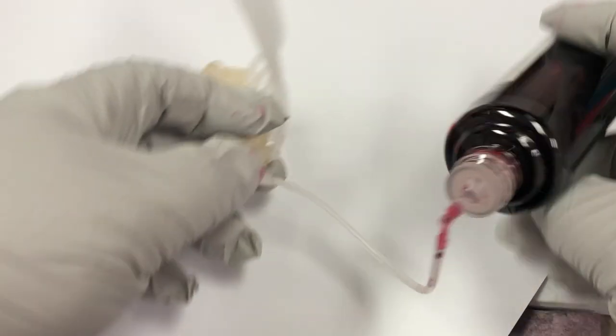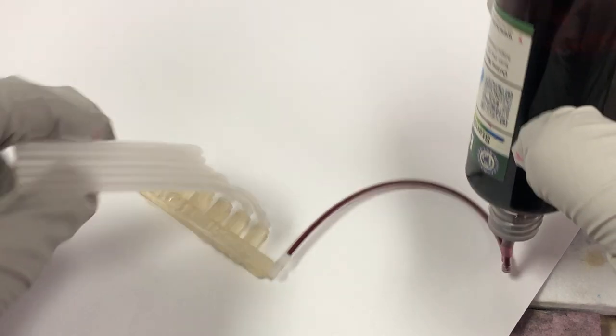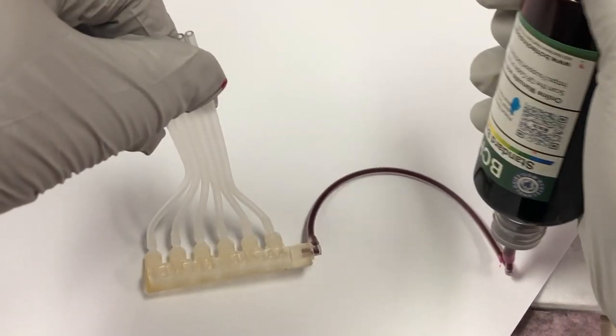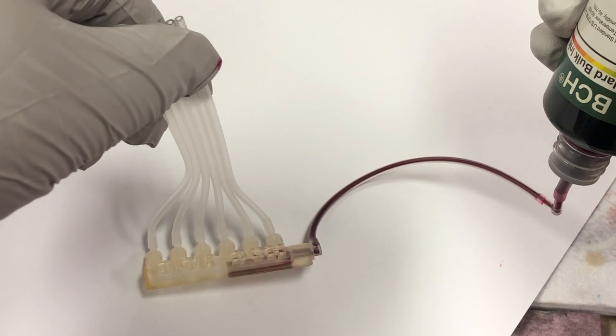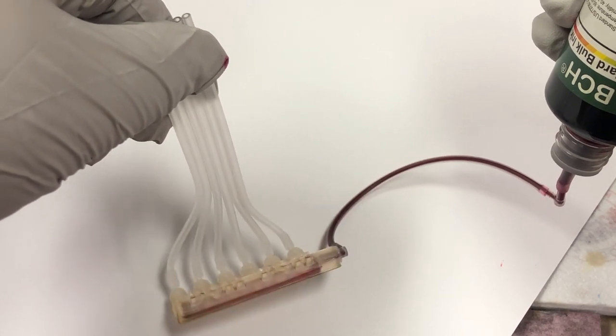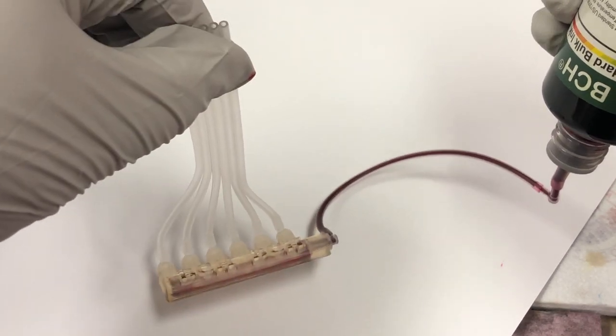The idea is you have one ink supply, then this ink supply gets split into multiple, and so you only get one continuous ink tank to deal with.